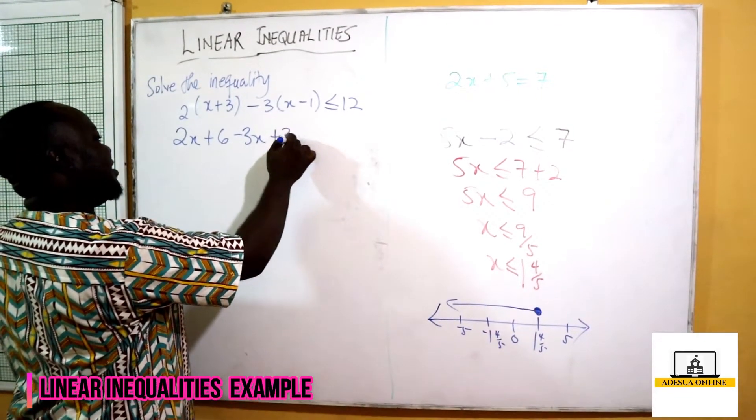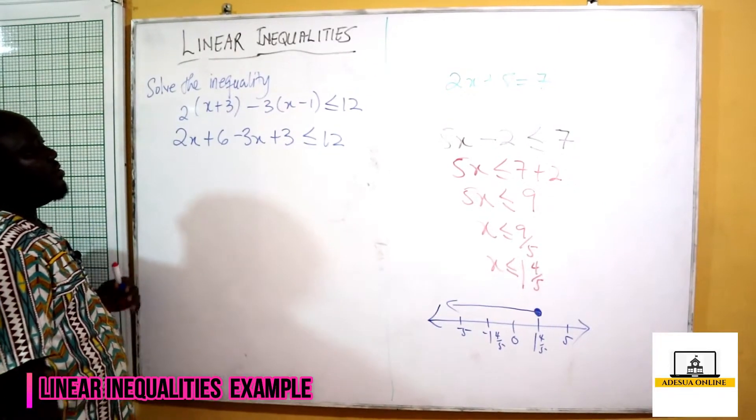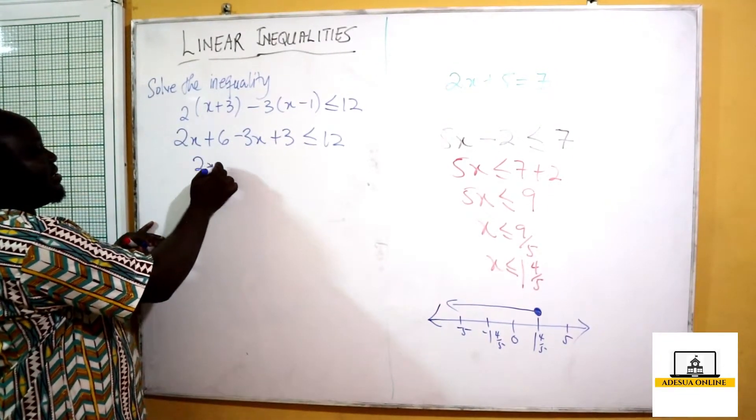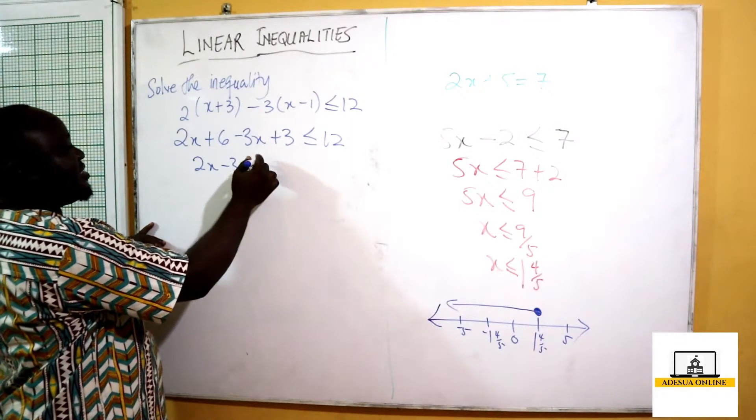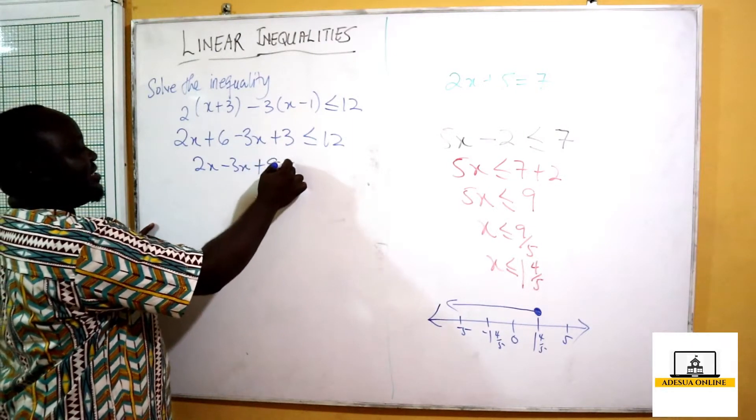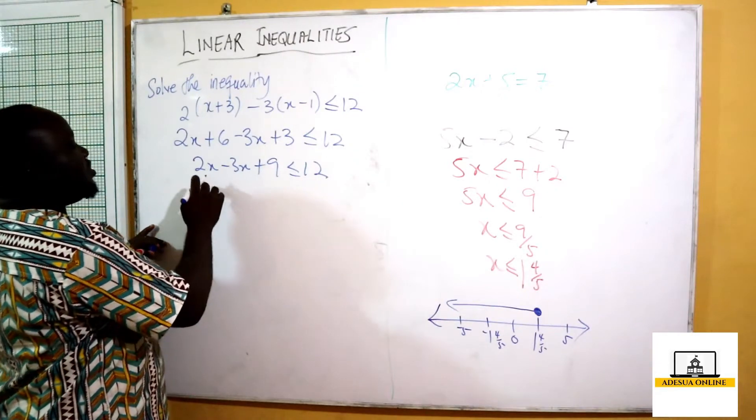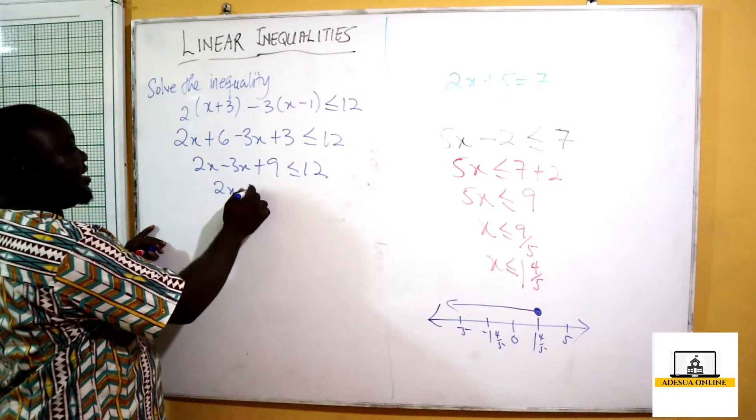Now we shall have 2x minus 3x. 6 plus 3 will give us 9, so plus 9 is less or equal to 12. We shall have 2x minus 3x less than or equal to 12 minus 9.